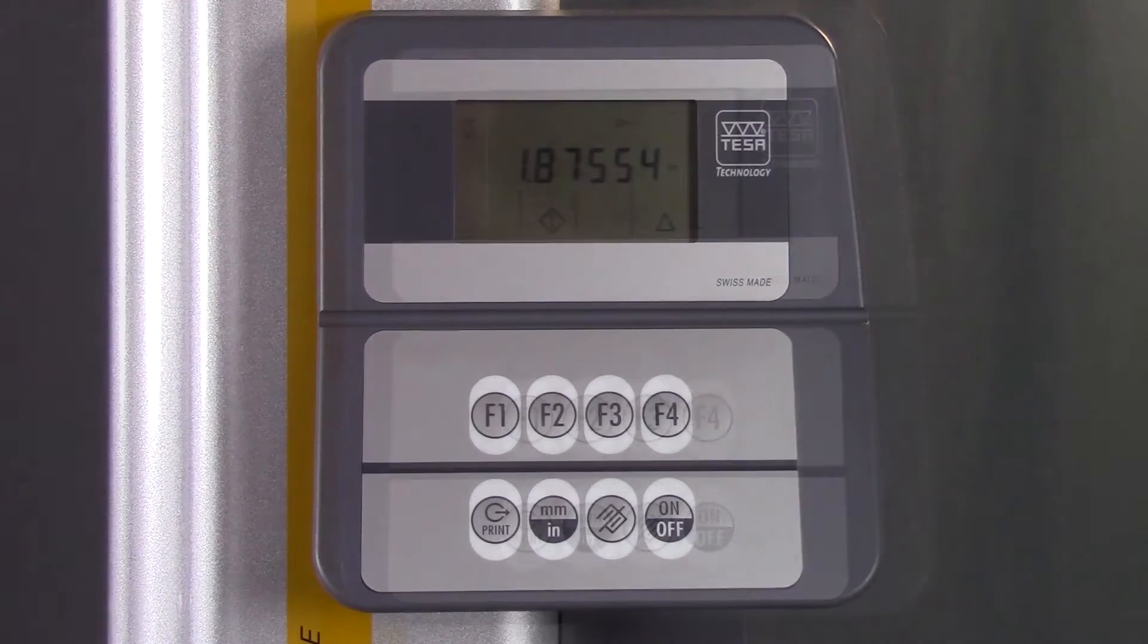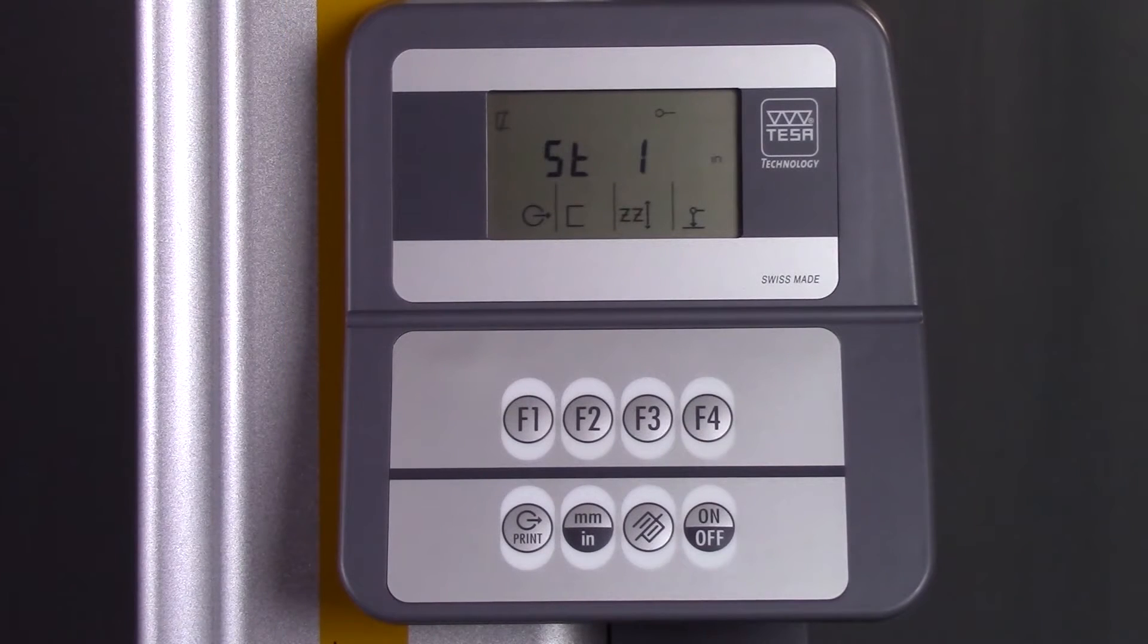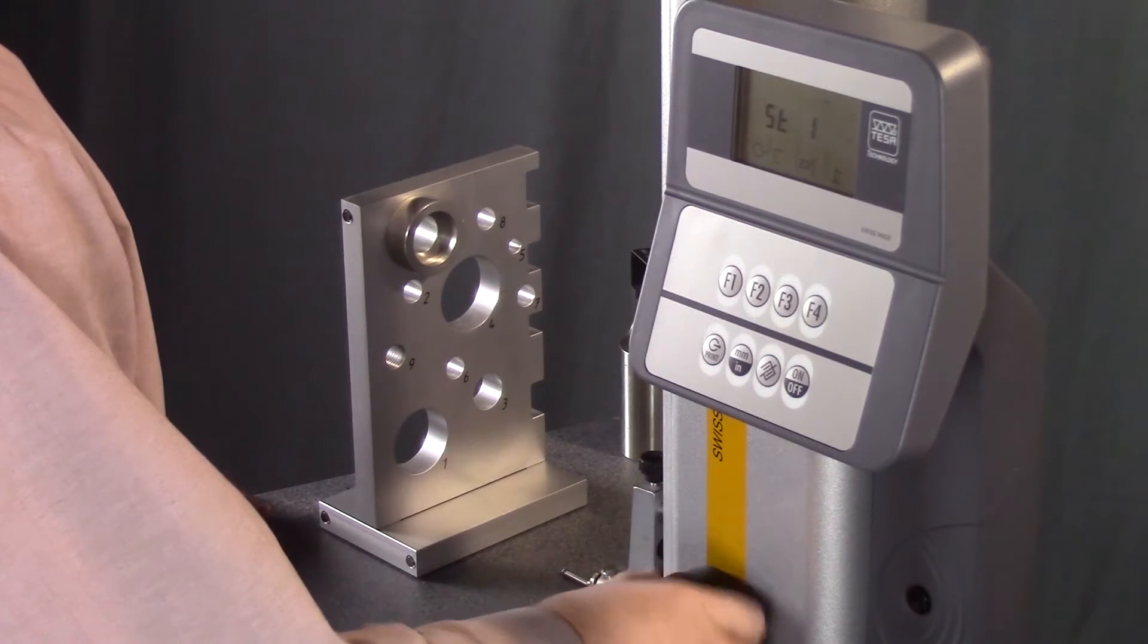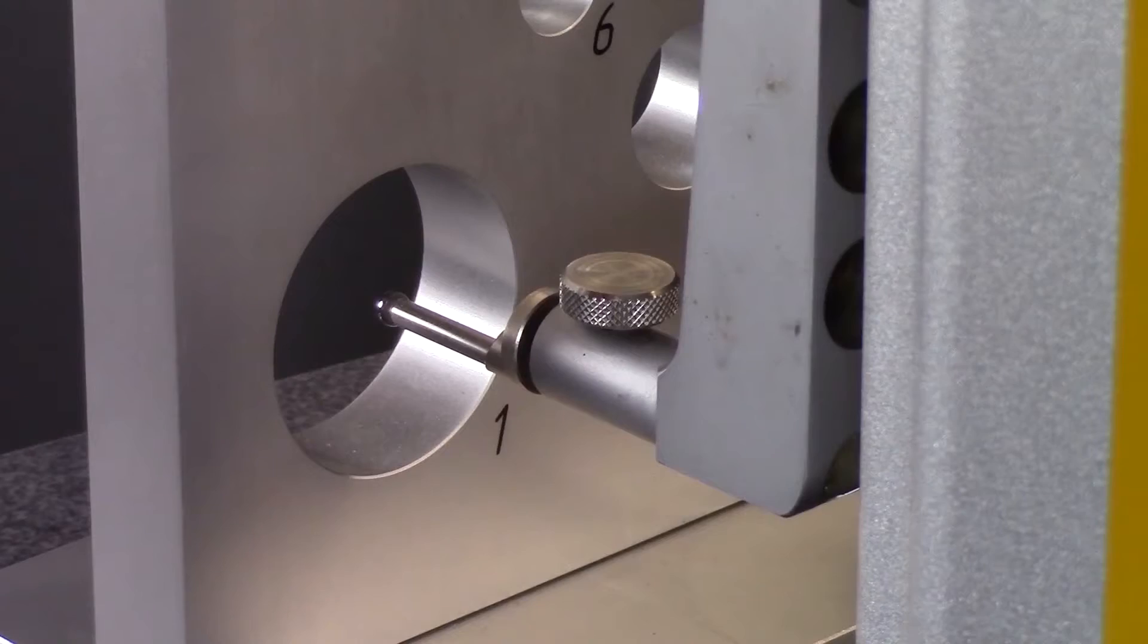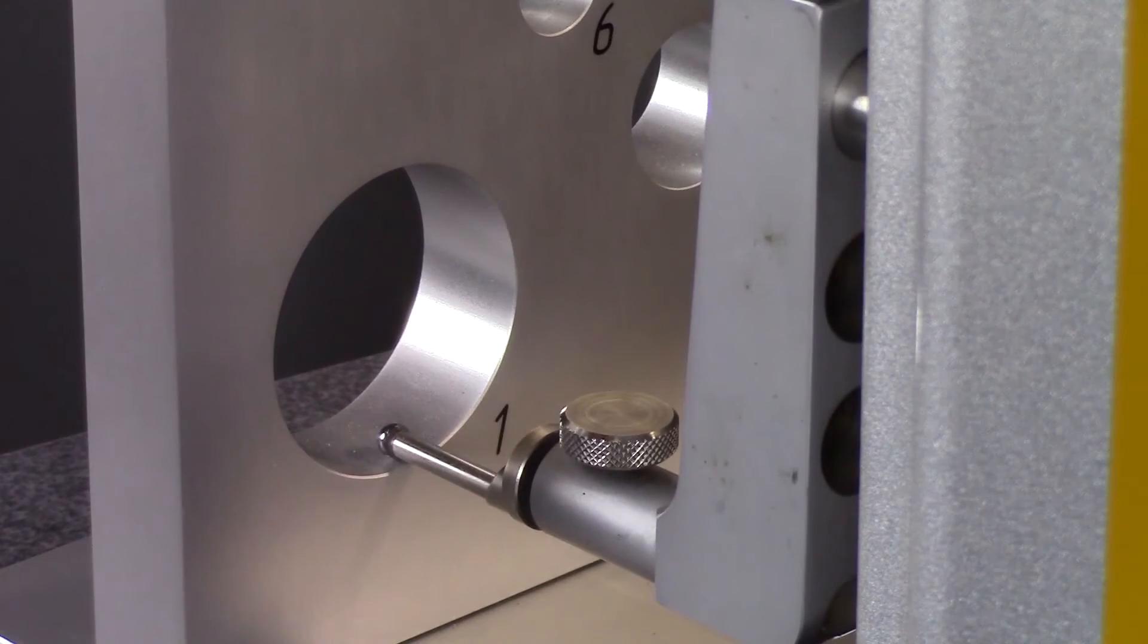Just remember that when you measure in start one mode, you can only make probe contact in one direction. So if you establish your datum using the bottom of the probe, all your measurements will need to be taken using the bottom of the probe as well.